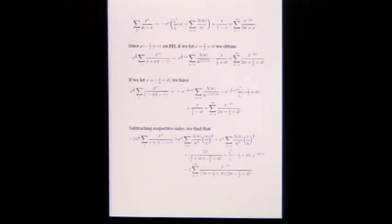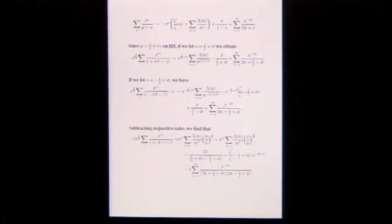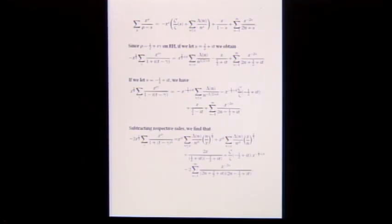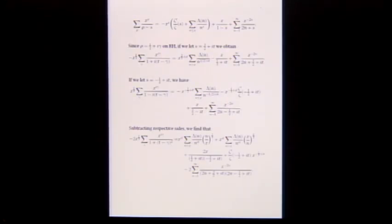The same thing goes for the next slide — it's exactly what we just saw. Now I want to write this with two different choices of s. Assuming RH, think of the zeros rho as one-half plus i gamma. First, make a choice of s as three-halves plus i t. If you make that substitution, you get exactly this expression.